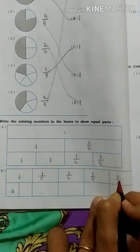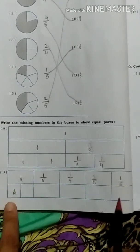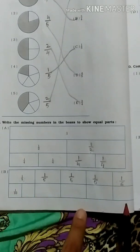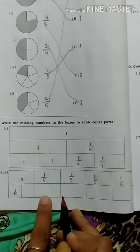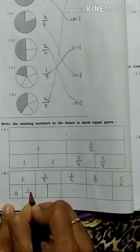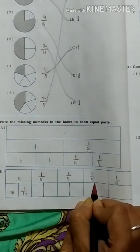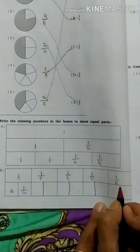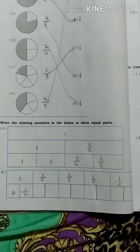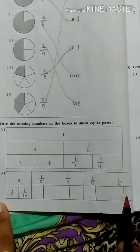So this is 1 upon 5. 1 is already given, and 2, 3, 4, 5 — this is called 1 upon 5. Now this 5 parts column is divided into 10 parts. 1 part is divided into 2. So here you have to make a middle line and write 1 upon 10. Why is it 1 upon 10? Because it's divided into 10 equal parts. Let's count: 1, 2, 3, 4, 5, 6, 7, 8, 9, 10. So this is 10 equal parts.